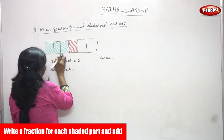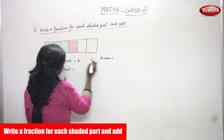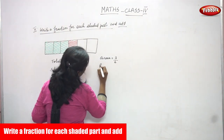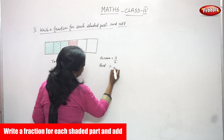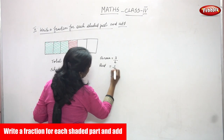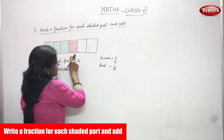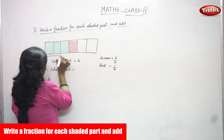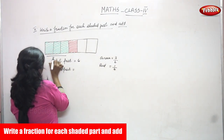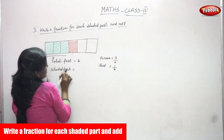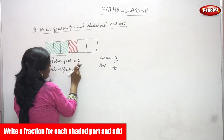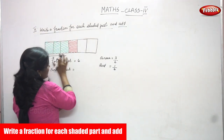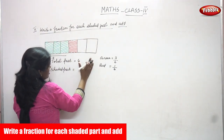Shaded in green color means how many parts? That is three — so you write three by six. Shaded in red color means one part, so that is one by six, because only one part is in red color. The other three parts are in green color, so we write three by six. Total parts is six.